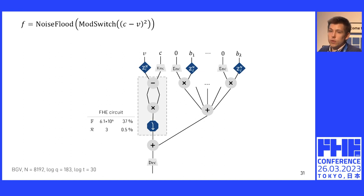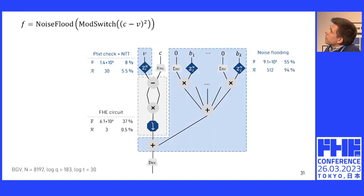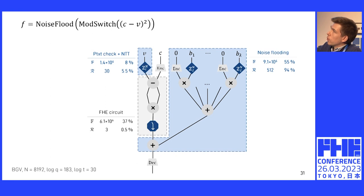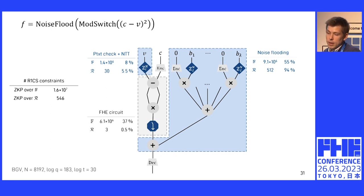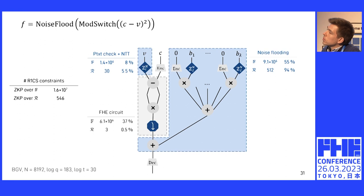But if we use a ZKP over rings, we can actually express this entire subcircuit in just three constraints over polynomials. The other elements are similarly expensive to emulate in the field-based ZKP but much cheaper for the ring-based ZKP. In total, this entire circuit takes 550 constraints to express over a ring ZKP and around 16 million constraints in a standard field-based ZKP.